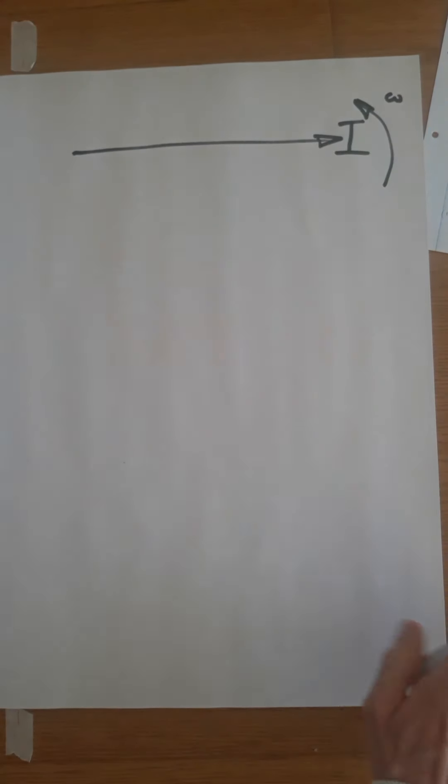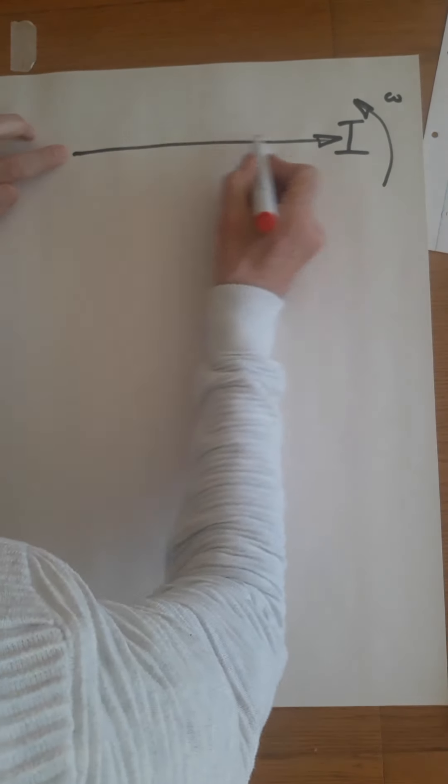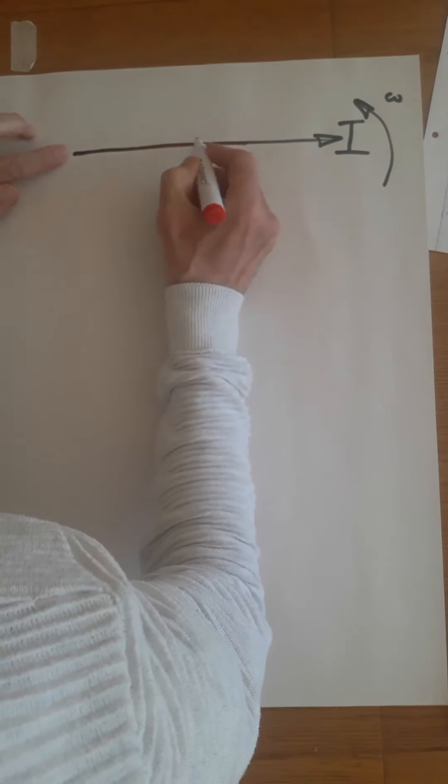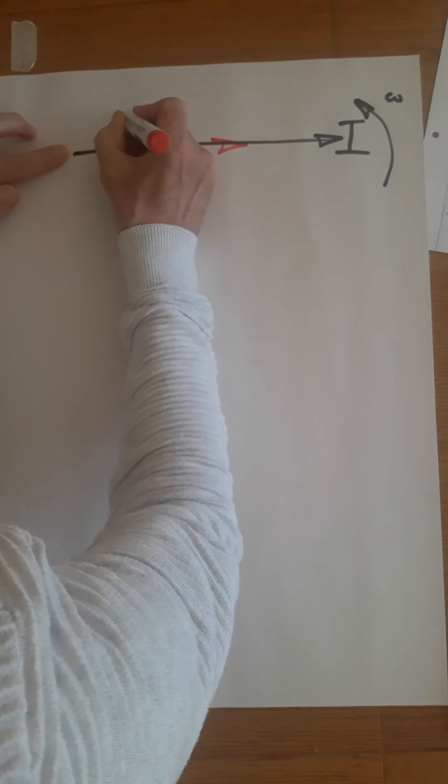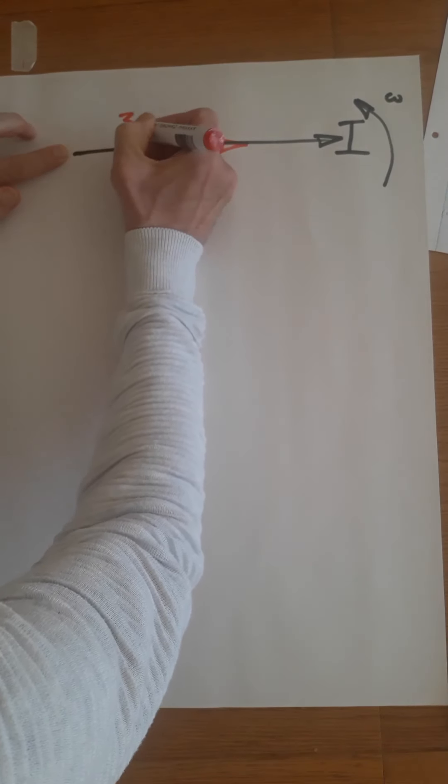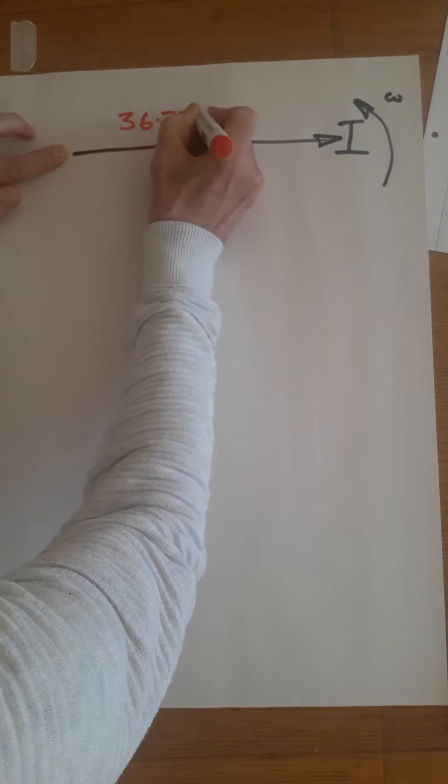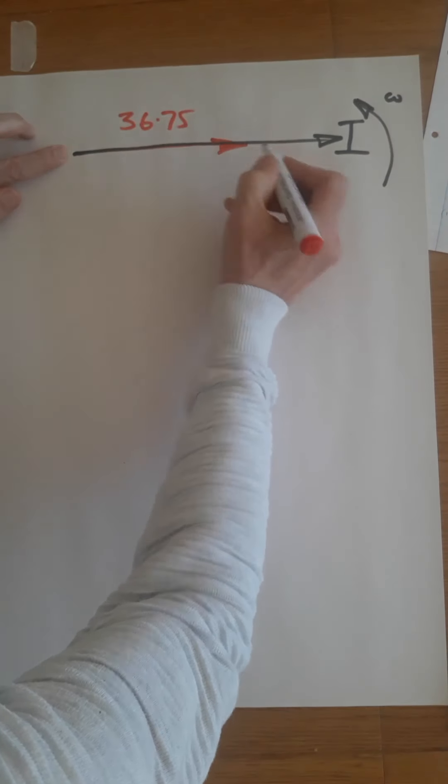It's our reference phasor. Then we need to plot the voltage across the resistor. Voltage and current are in phase in a resistor, so there's the current, and that was 36.75. This is only a sketch.